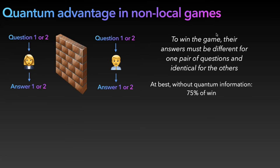With classical information, you can win this game only three out of four times. One example is if Alice and Bob always give the same answers, then they will be right 75% of the time and wrong for the remaining pair of questions. You can show that this is the best they can do.